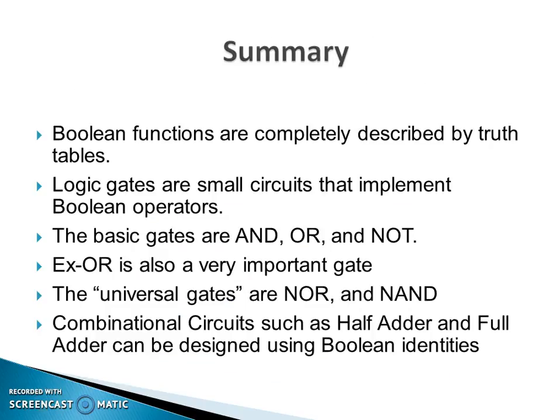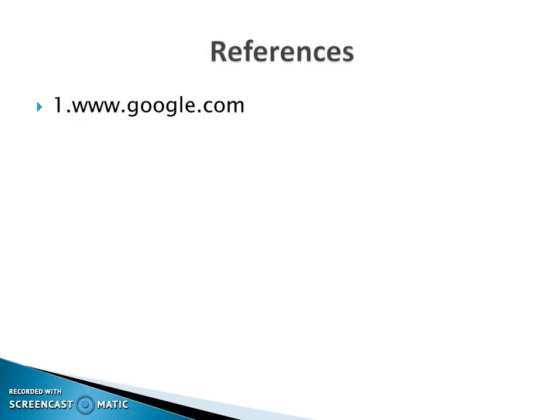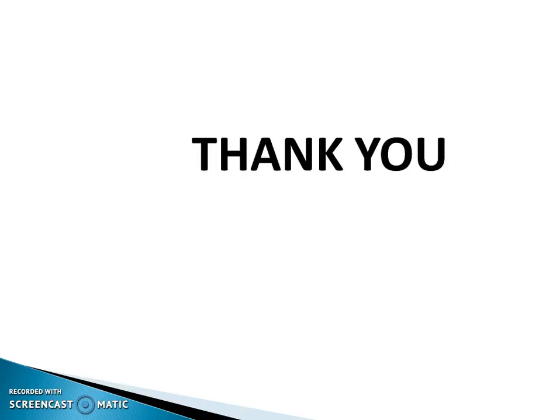In summary, Boolean functions can be completely described by truth tables, and Boolean identities can be used to reduce any expression. Logic gates are small circuits which implement Boolean operators. Basic gates are AND, OR, NOT, and XOR. NOR and NAND are universal gates. Combinational circuits such as the half adder and full adder are designed using Boolean identities. References have been taken from Google for many of the diagrams. The other part of this session will be continued in the next lecture. Thank you so much for listening.